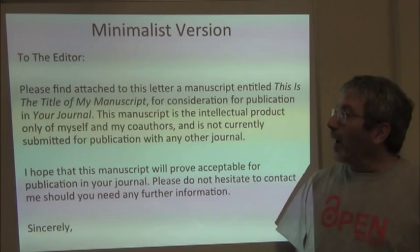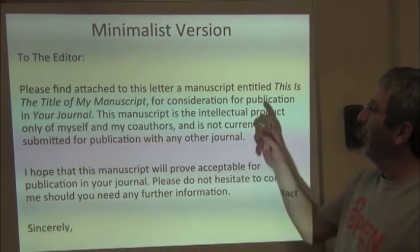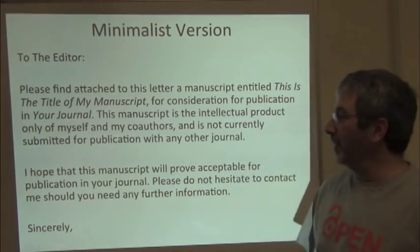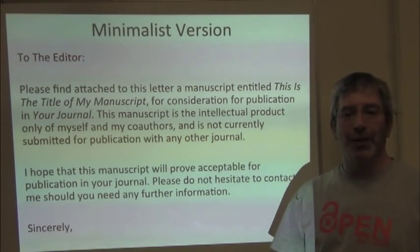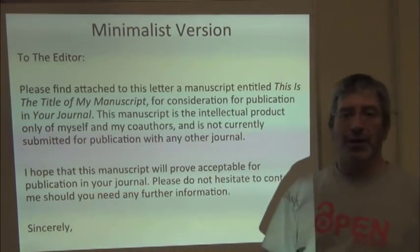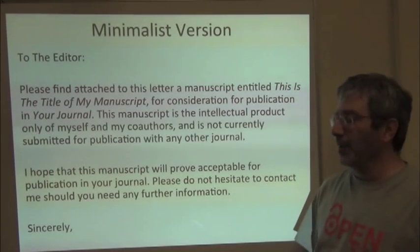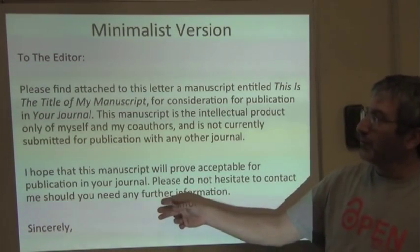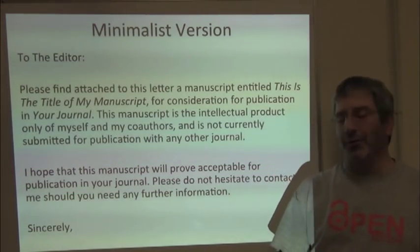So, how do we do that? I personally will use this very simple format: 'To the editor, please find attached to this letter a manuscript entitled [title] for consideration for publication in [journal name]. This manuscript is the intellectual product only of myself and my co-authors' — meaning everybody who should be a co-author is included. 'And this manuscript is not currently submitted for publication with any other journal.' That's saying I'm not sending it to five journals at a time. All I go on to say is, 'I hope this manuscript proves acceptable. Please do not hesitate to contact me if you need any further information. Sincerely, me.'